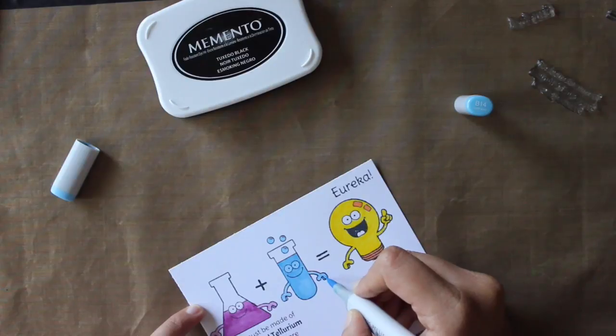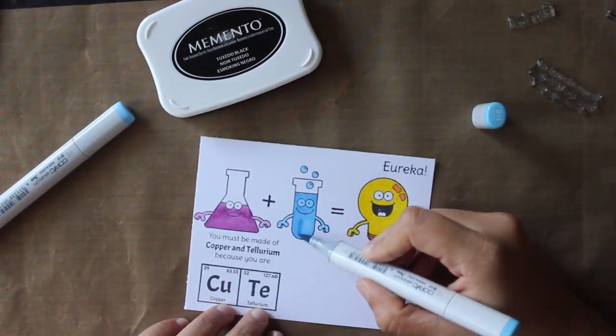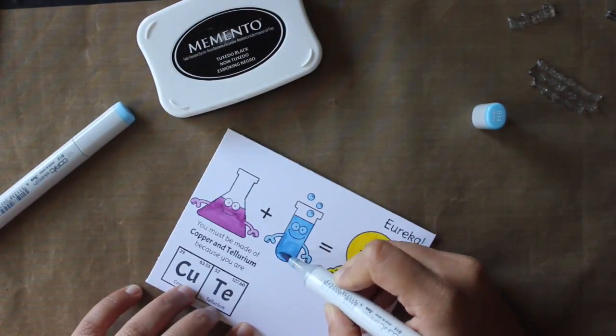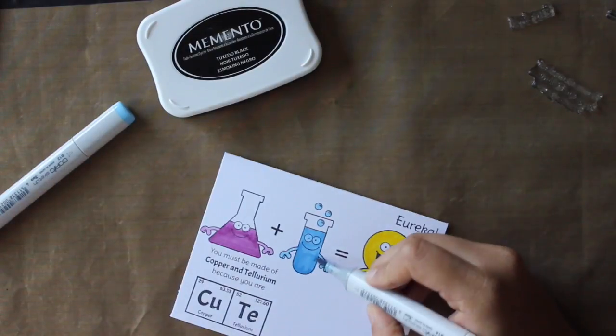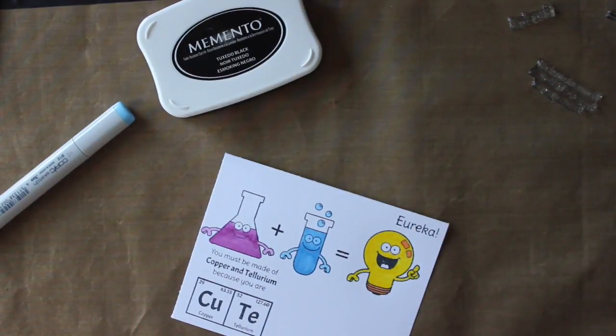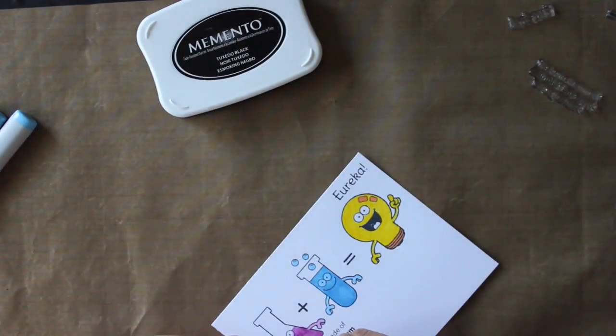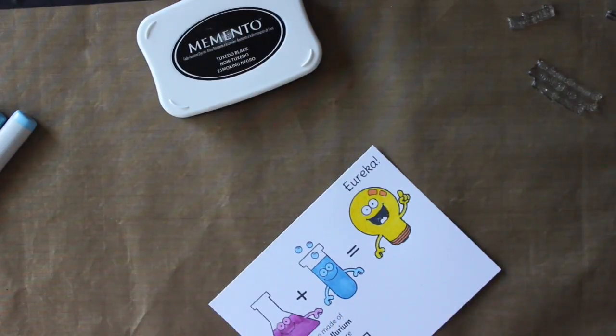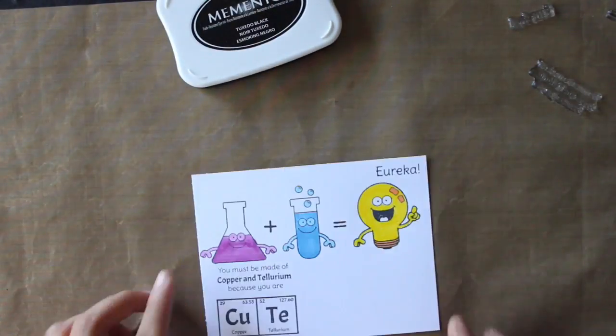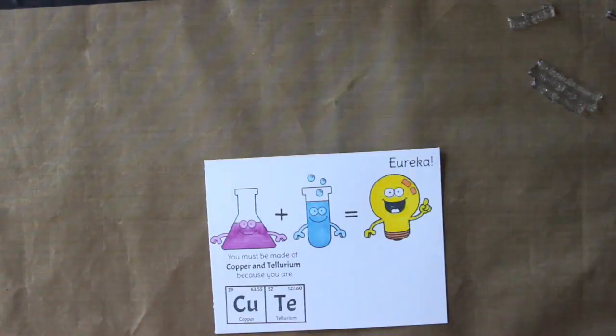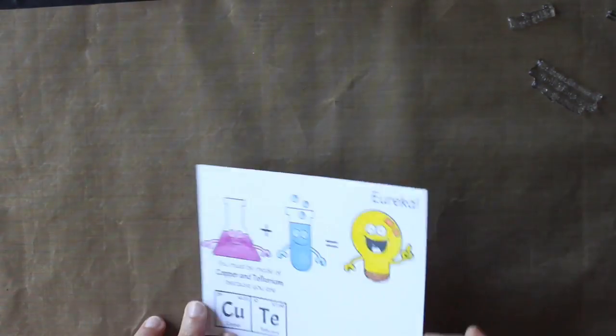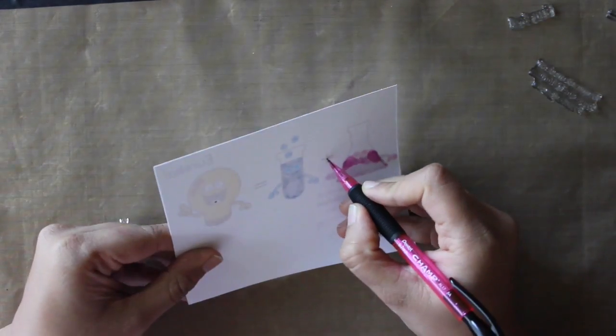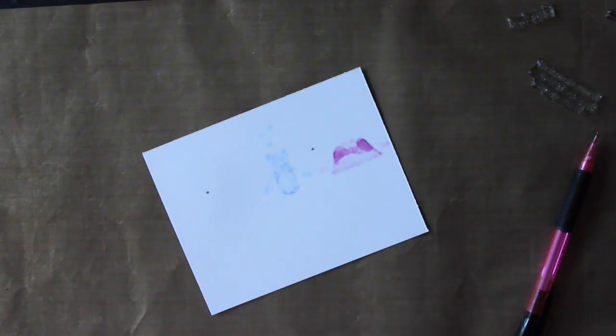I made the light bulb say Eureka. I'll show you why in a bit because it's going to be an interactive card. I'm going to make it look like the light bulb is glowing and the experiment is a success when my niece presses the plus sign. Now I'm going to make small markings behind with my pencil on the plus and on the light bulb.